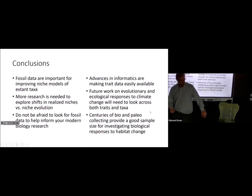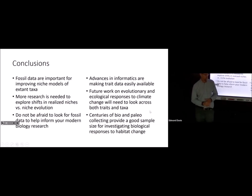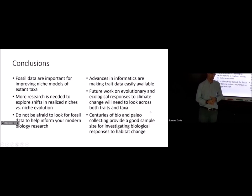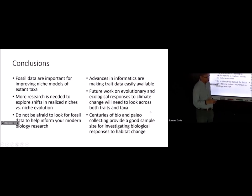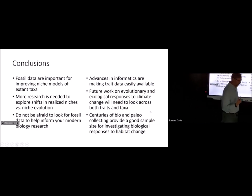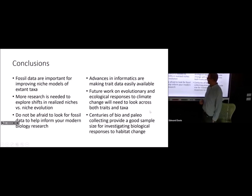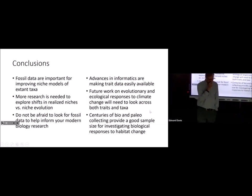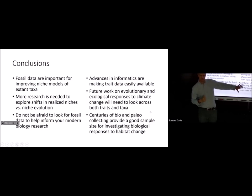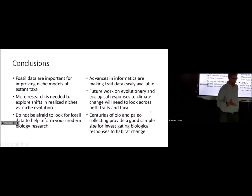In the end, fossil data are important for improving niche models of extant taxa. We're not sure exactly how best to use them yet, but there are enough results now to be confident we should look at both modern and fossil distributions to make optimal niche models. We need to explore realized niches versus shifts in niches, and don't be afraid to look for fossil data if you have a modern biological problem — there are so many data available online now that you can probably find some to help inform your analysis. Future work will need to look at both traits and biodiversity together.